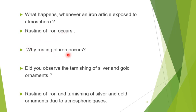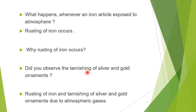Why does rusting of iron occur? And also, did you observe the tarnishing of silver and gold ornaments? Generally we observe the tarnishing of silver — that means a black layer forms on the silver material, or some black layer forms on the gold ornaments also. That is tarnishing. So rusting of iron or tarnishing of silver and gold ornaments — why does this occur?